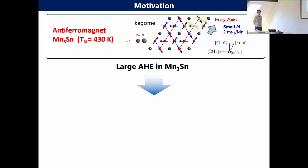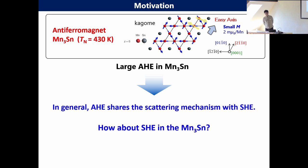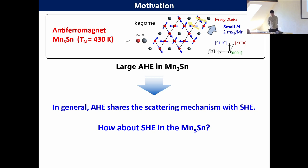So in this sense, the spin Hall effect is a very important effect in the spintronics sphere. Then we asked a very naive question. This antiferromagnet Mn3Sn is a very new material. Even in this antiferromagnet, as already explained, this material shows a very large anomalous Hall effect. In general, the anomalous Hall effect shares the same scattering mechanism with the spin Hall effect. So in those cases, how about the spin Hall effect in Mn3Sn and these kinds of non-colinear systems? This is a very naive question, so we started the experimental research.